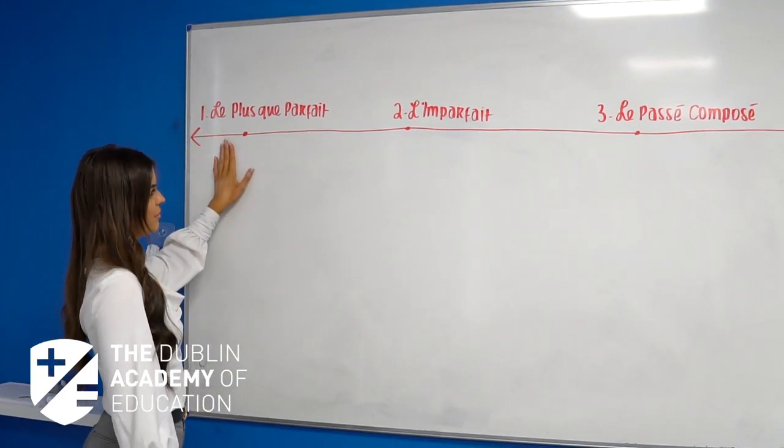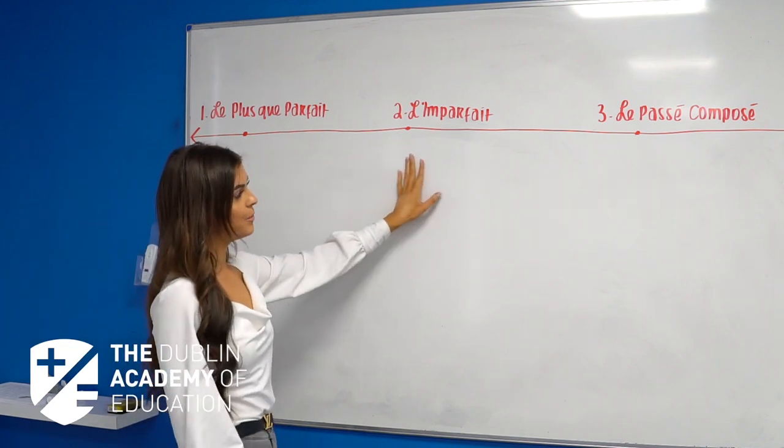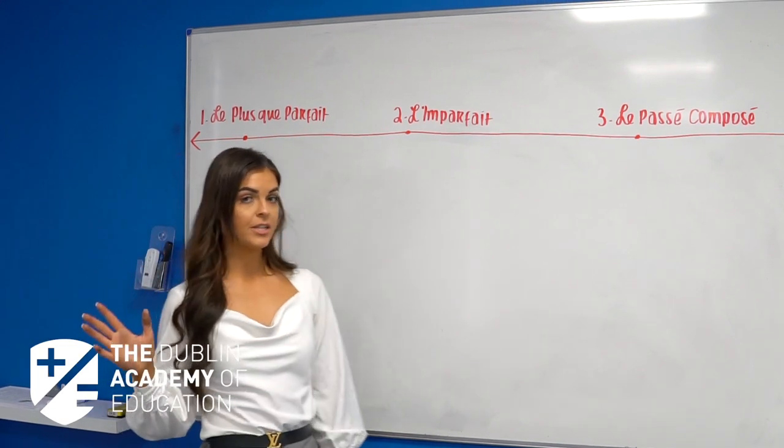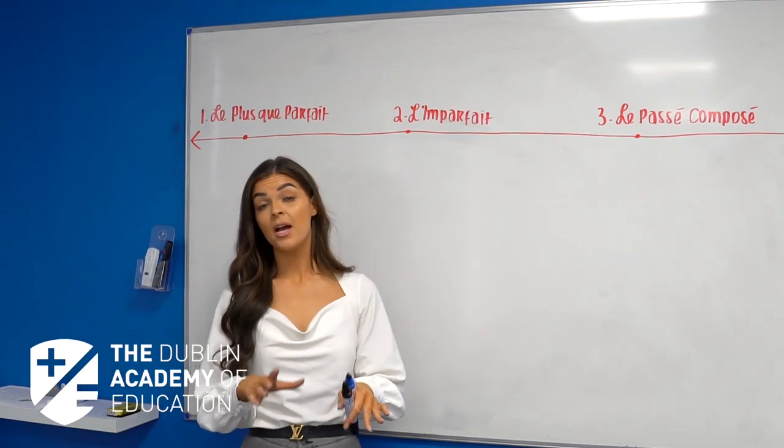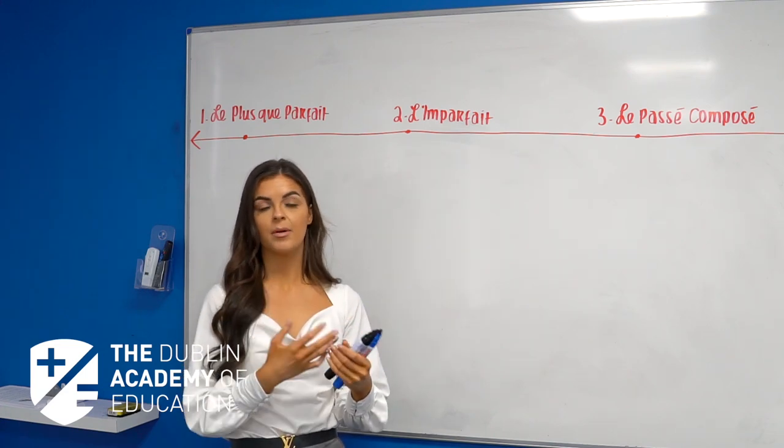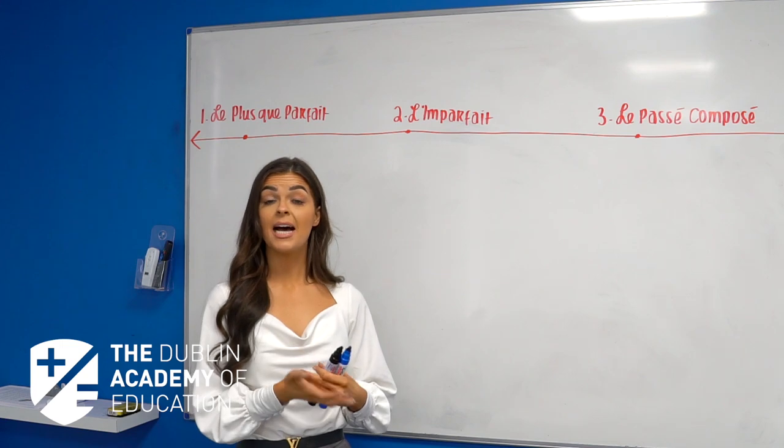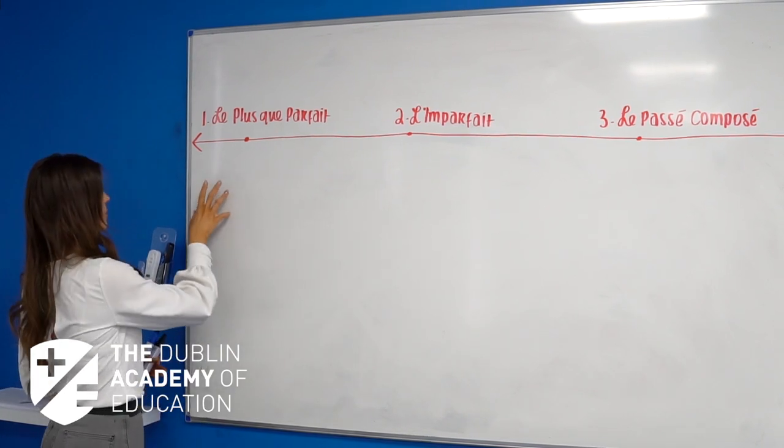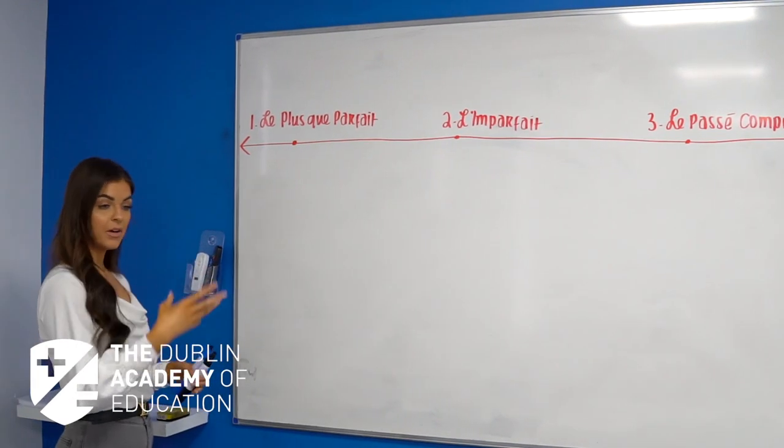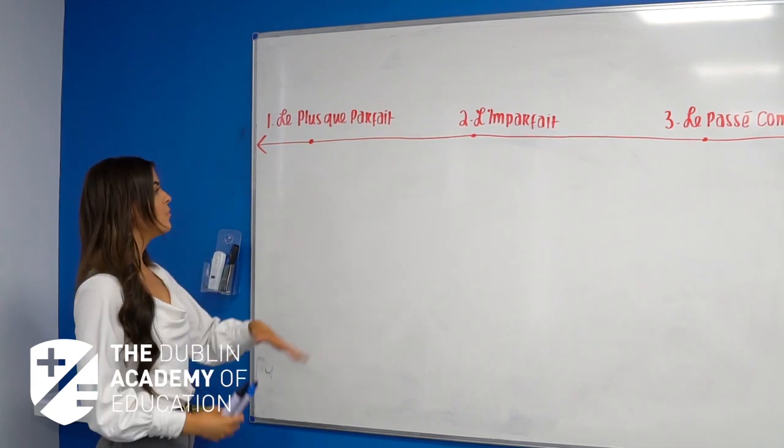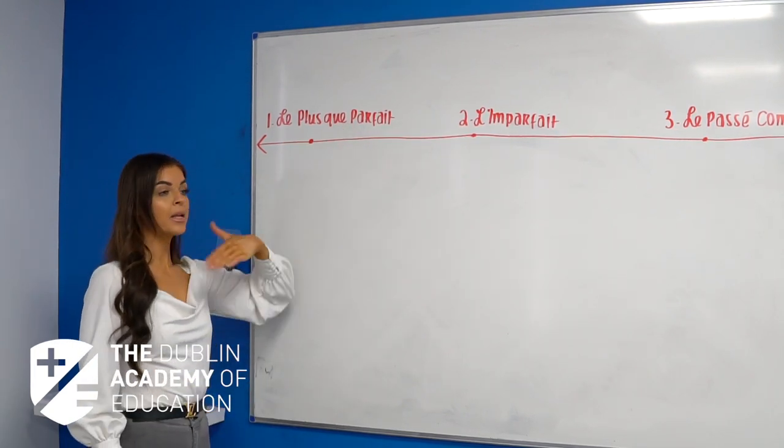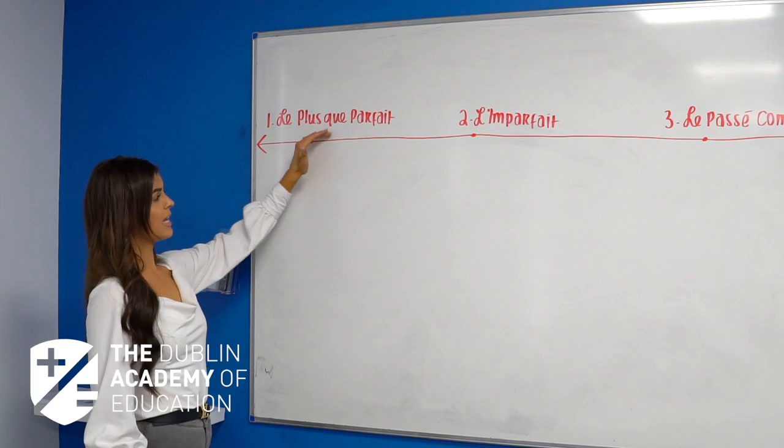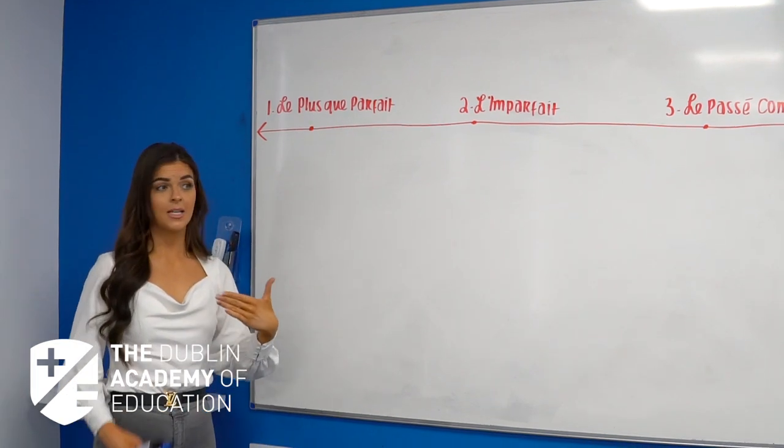On our board we've got number one: le plus-que-parfait, number two: l'imparfait, and number three: le passé composé. The first thing I'm going to tell you is regardless of any language, the word perfect in grammar means that that tense at some stage has a relationship to the past.